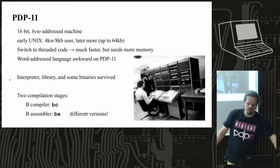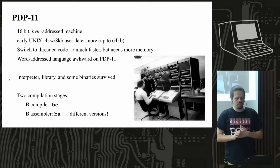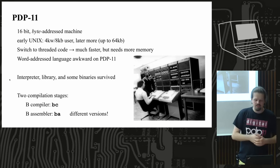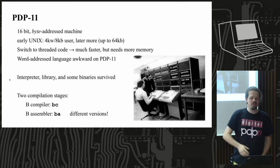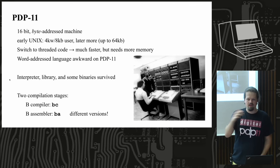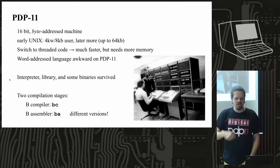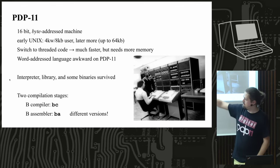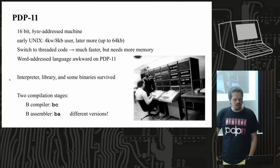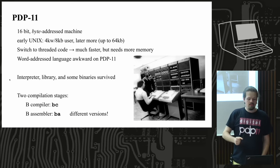The interpreter, standard library, and even some binaries survived. The binaries are the interesting part — from them you can tell what the compiler did. If you have source code for the printf function and the binary version of that same function, you can check how the compiler generated the B threaded code from the B source. That was the starting point for my project, since some of these binaries survived.